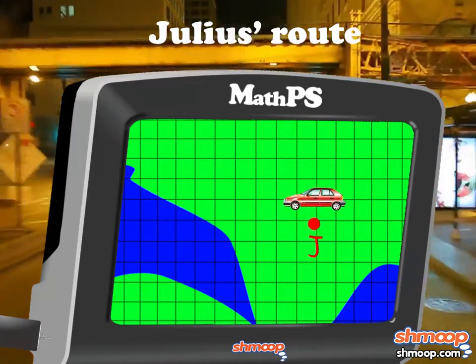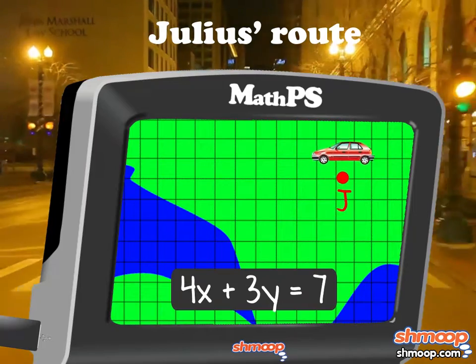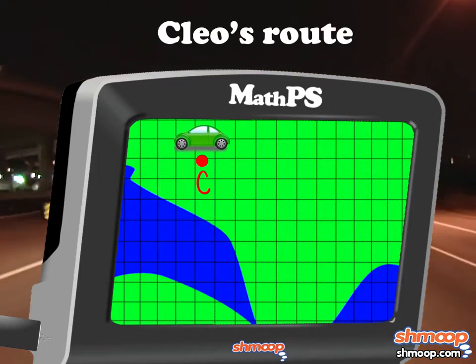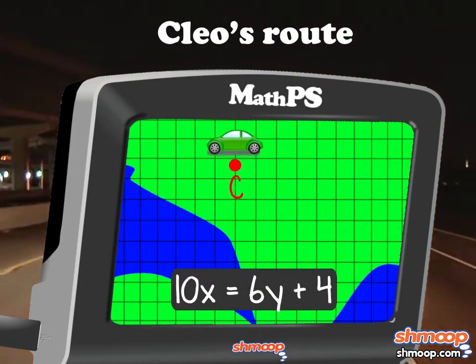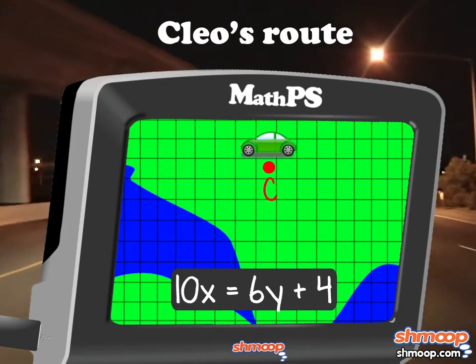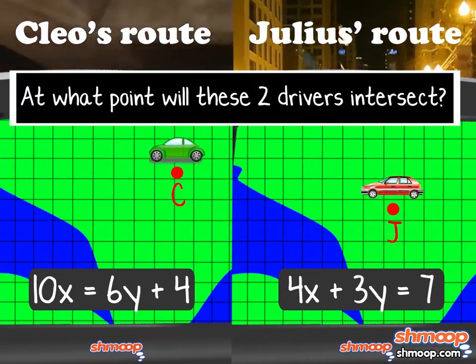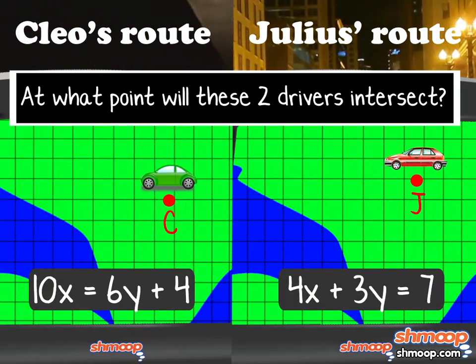Julius says the best route is 4x plus 3y equals 7. Cleo's reads 10x equals 6y plus 4. At what point will these two drivers intersect? Here are your options.